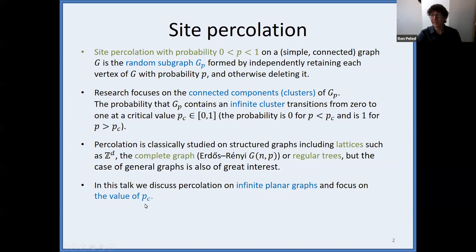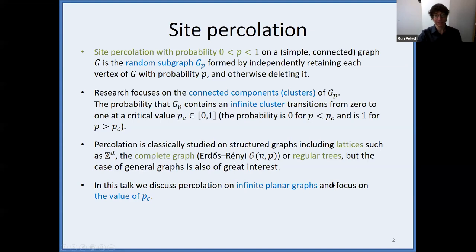I'd like to know about the value of P_C — not the precise value, but rather bounding it away from zero and one. This talk will use site percolation. There is also a related process, bond percolation — that's what you get on the Erdos-Renyi graph, where you keep every edge with probability P. But when I speak of planar graphs, it will be important to talk about site percolation rather than bond percolation.